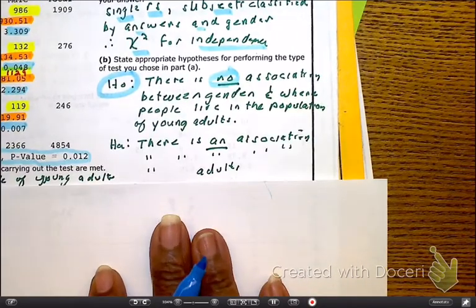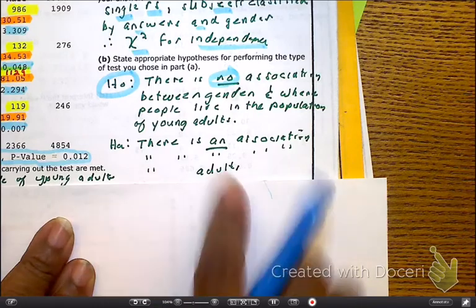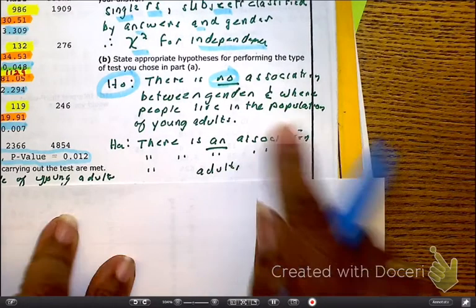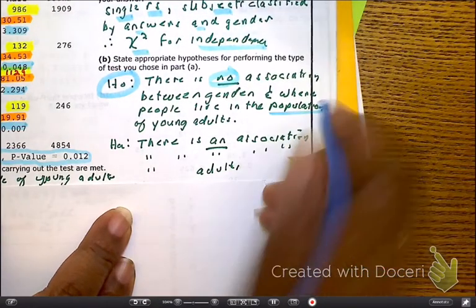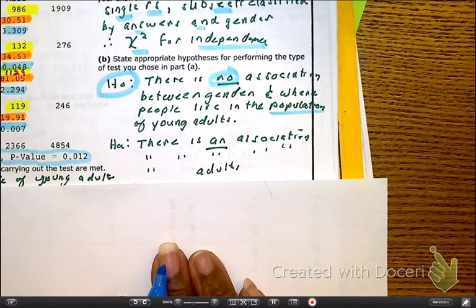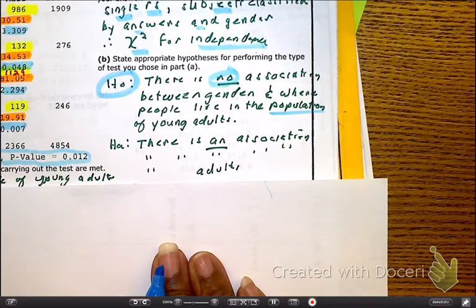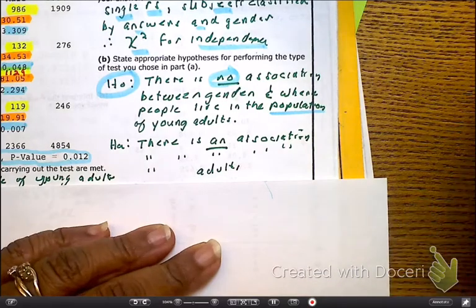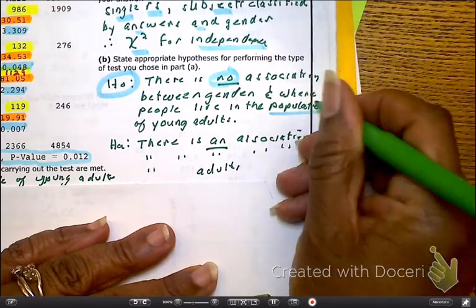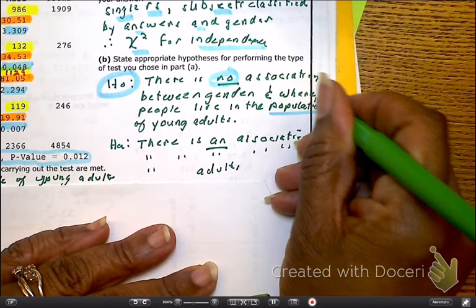Okay, there is an association. There is a relationship between the gender and where the people live in the population. Now, if your thoughts are, if it didn't say true population, Ms. Yarbrough, aren't you missing that? Well, I did mention population, so I'm okay there. If you want to say in the true population, you can because you feel better about that. That's fine.